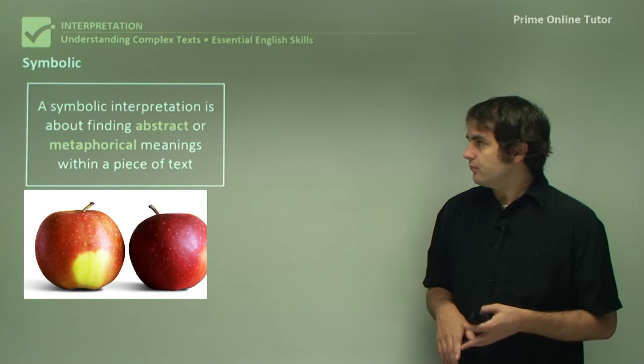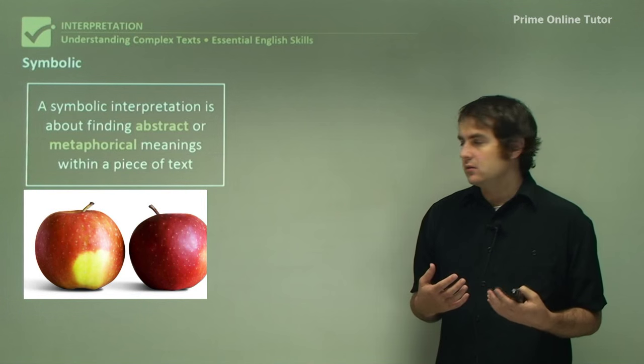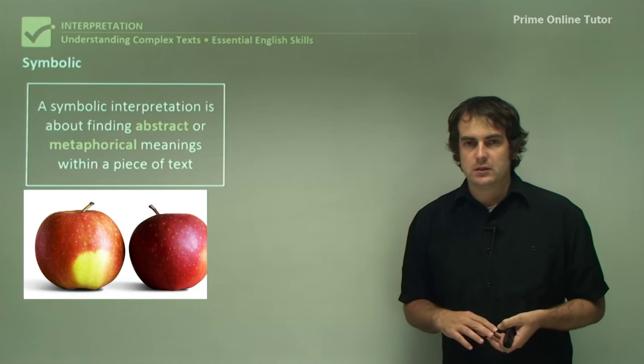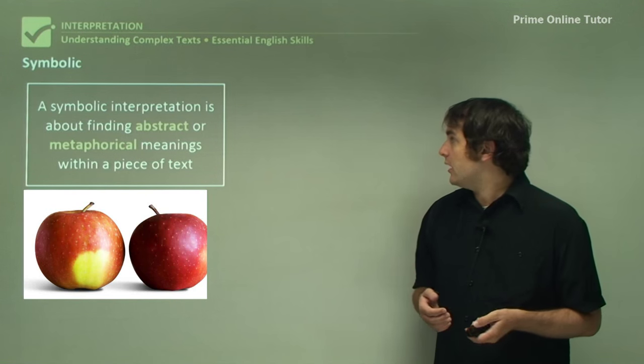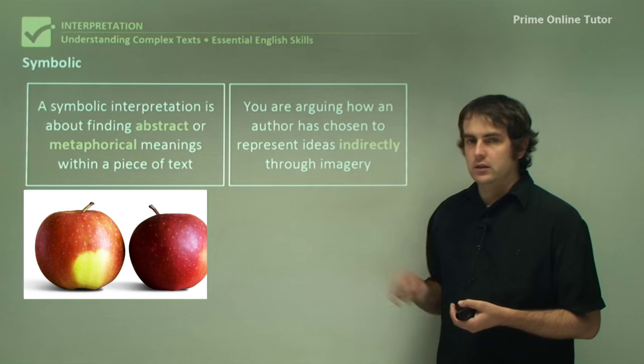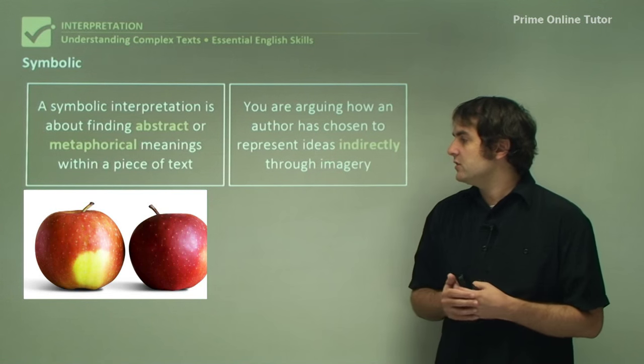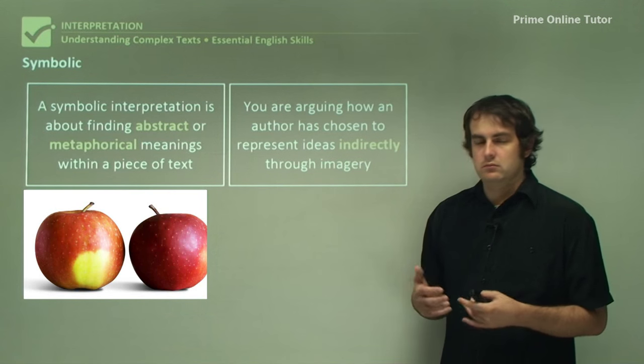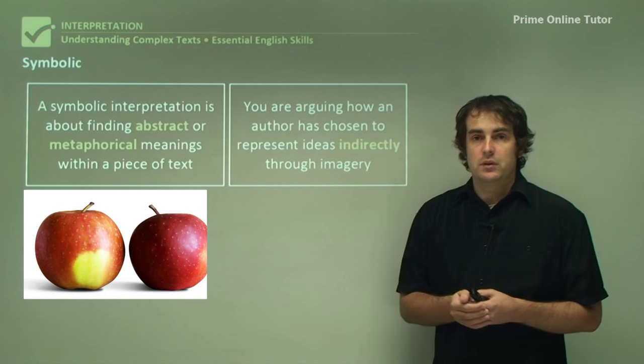Okay, the symbolic. So it's about finding abstract or metaphorical meanings within a piece of text. We're going to stick with our apple example for the meantime. So you're arguing how an author is chosen to represent ideas indirectly for imagery. So what the apple actually stands for can be more than literally just the apple, depending on what you believe as well.